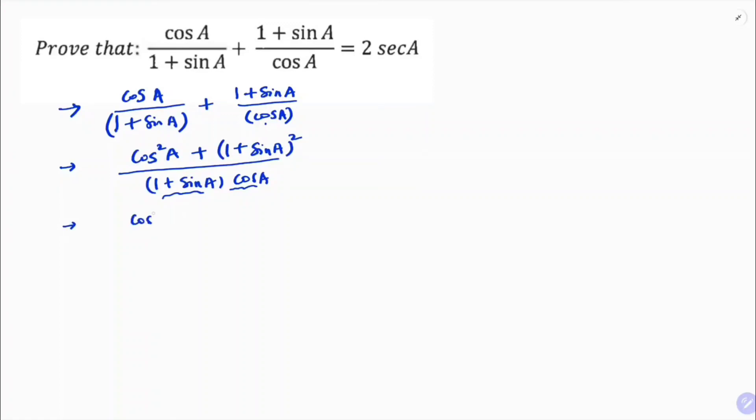Now, this is cos square A, and it is in the form of A plus B whole square. So A plus B whole square is A square, plus 2AB, 2 into 1 into sin A, plus B square, which is sin square A, upon 1 plus sin A. Its value is 1, cos square A plus sin square A.